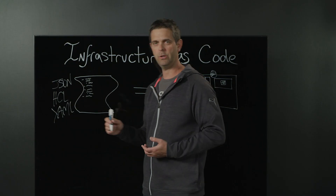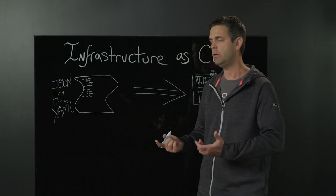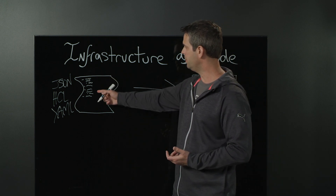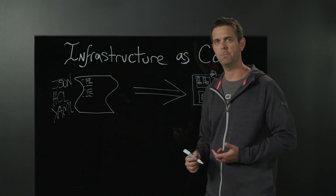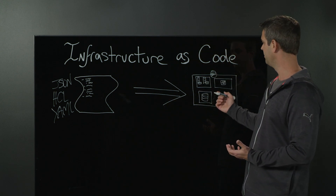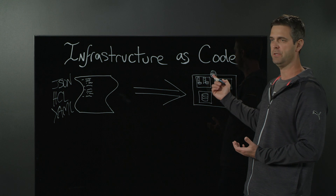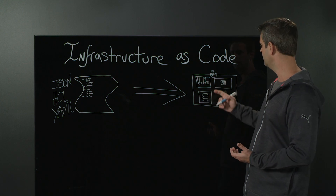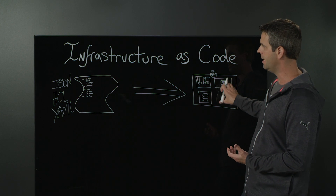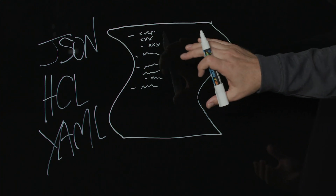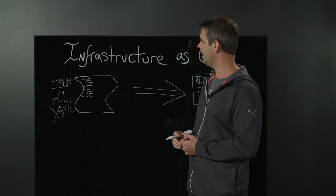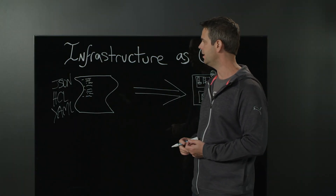The language is going to depend on the interpreter that you choose. Essentially, we define all those resources, we define the configuration parameters, we hand this over, and within a matter of minutes I have my networking infrastructure, some servers, maybe a load balancer, a database — all of those things automatically generated from the infrastructure code we've created.